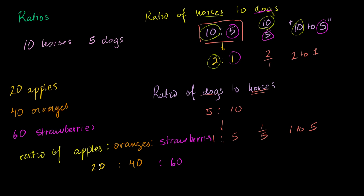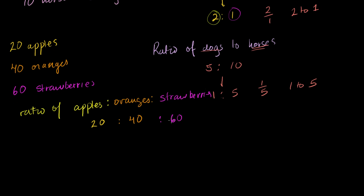What's the largest number that divides into all three of these? It's 20. Dividing all of them by 20: for every 1 apple, I have 2 oranges and 3 strawberries. So the ratio of apples to oranges to strawberries is 1 to 2 to 3, which I get by dividing all three original numbers by 20.